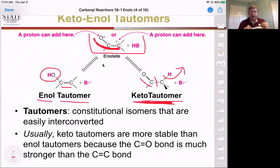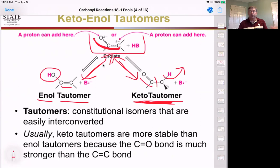These are constitutional isomers that are easily interconverted by going through the enolate ion, and depending on which side gets protonated, they go back and forth between the two systems. We can easily convert from ketone to enol and back. Usually the ketone is more stable because the carbon-oxygen double bond is stronger than the carbon-carbon double bond, but we can influence which side is favored based on electronics.